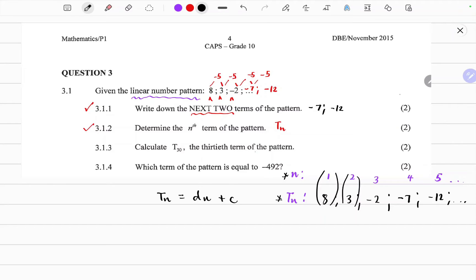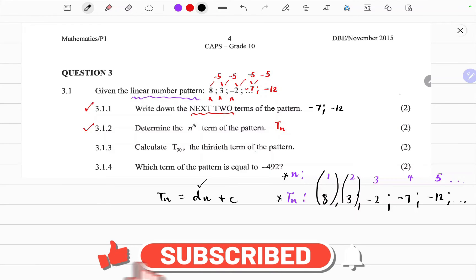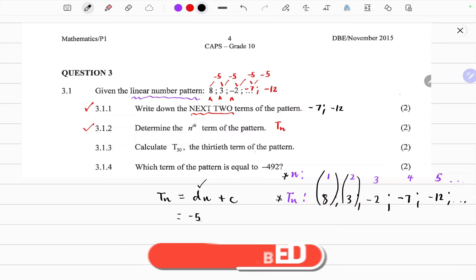So now it becomes easy to work out the formula to find Tn, because we have the first constant difference. It is minus 5, so we can just substitute minus 5. We can use any pair. When n is 1, the term is 8. So we can substitute 1 here, and the term is 8. So now it's possible to find C.